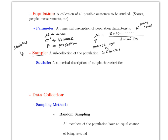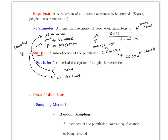Instead of asking 34 million Californians, it's possible to ask around 20,000 — that's doable. Every parameter has an approximation called a statistic. For example, x-bar is the sample mean and approximates mu. S-squared is the sample variance and approximates sigma squared. P-hat approximates the population proportion p.